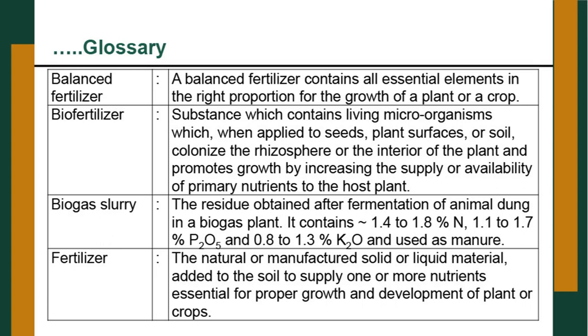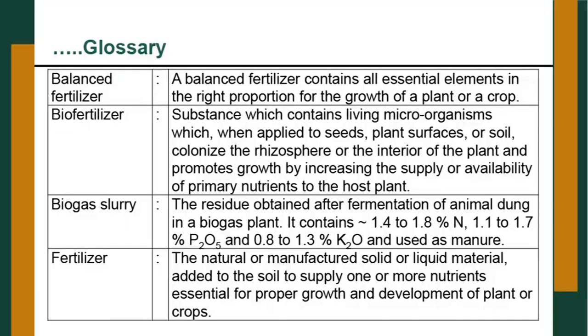Biofertilizers are applied in soil or via seed through different mechanisms. They help in the fixation of nutrients — like rhizobium or azotobacter — some are symbiotic and some are asymbiotic. Biogas slurry is the residue obtained after fermentation of animal dung in a biogas plant; it contains 1.4 to 1.8 percent nitrogen, 1.1 to 1.7 percent phosphorus, and 0.8 to 1.3 percent potassium, and is used as a manure.